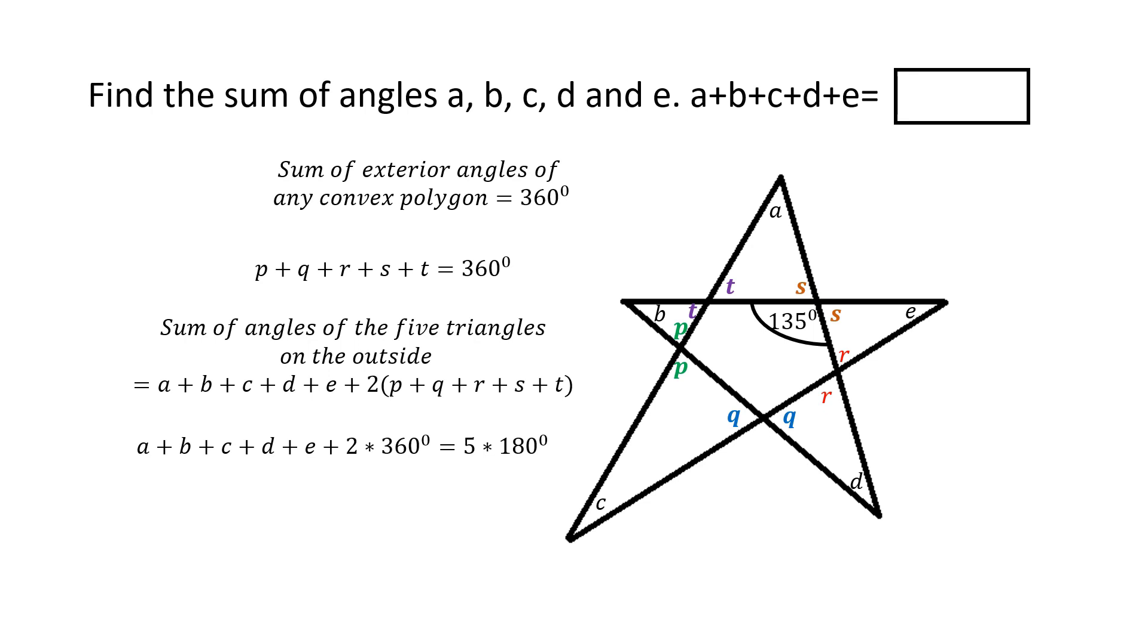It becomes a simple matter of evaluating what the sum A plus B plus C plus D plus E will be. It's simply 900 degrees minus 720 degrees, and that comes to 180 degrees. So the correct answer for this will be 180 degrees, or if you are expressing your answer in radians, it will be simply pi radians.